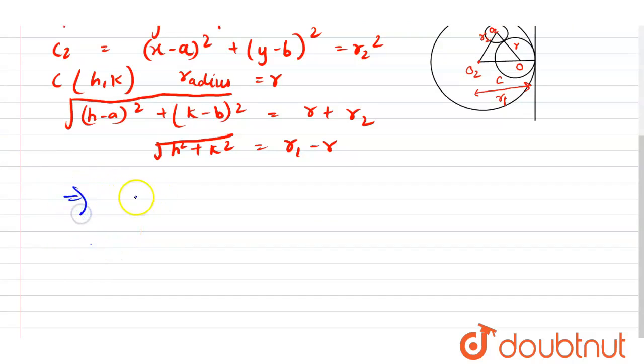Therefore it becomes h minus a whole square plus k minus b whole square plus h square plus k square is equals to r1 plus r2, putting this value here.